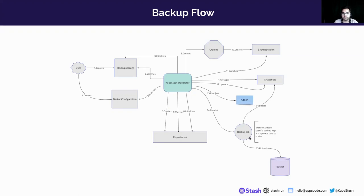The backup job executes the addon-specific backup logic, uploads the data to the backend, and finally updates the snapshot resource. When the snapshot has failed or succeeded, the KubeStash operator loads the snapshot into the cloud bucket.